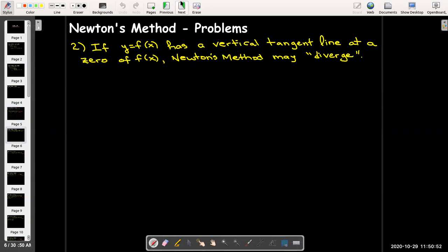The next problem is that if our function has a vertical tangent line at a 0, then Newton's method may diverge. And what does diverge mean? You're going to learn a lot about divergence versus convergence in second semester calculus. But for now it's enough to know that diverge means it's never going to approach any number. And as an example you can look at the cube root function and we'll just take our initial approximation to be 1.